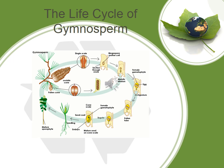The Life Cycle of Gymnosperm. Ovulate Cone, Single Scale, Megaspore Mother Cell, Meiotic Division, Female Gametophyte, Egg, Archegonia, Pollen Tube, Zygote, Female Gametophyte, Cone Scale, Seed Coat, Embryo, Seedling, Mature Sporophyte — and the cycle continues.